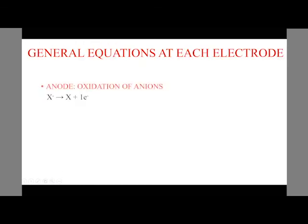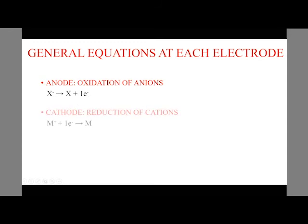What are the general equations for the reactions which take place at each electrode? At the anode, we have oxidation of anions. It is oxidation at the anode, remember, for anions, vowels only. And here we have an anion, which has lost one electron to produce, to become an atom and produce one electron.